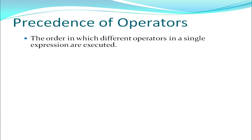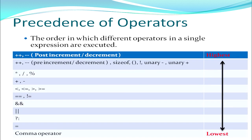If we use multiple operators in a single expression, there is an order in which different operators will be executed. The table shows the highest to lowest precedence. Just as in maths you have BODMAS, in C++ programming you have precedence rules that have to be followed. You have to be very careful while evaluating an expression that these precedence rules are followed.